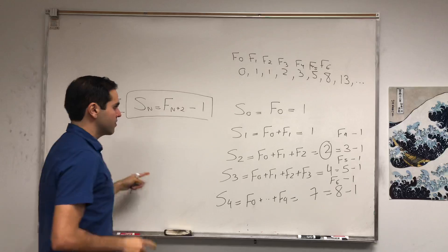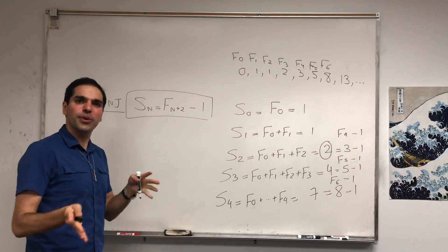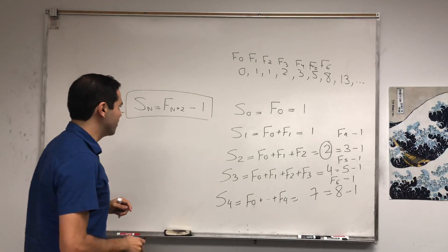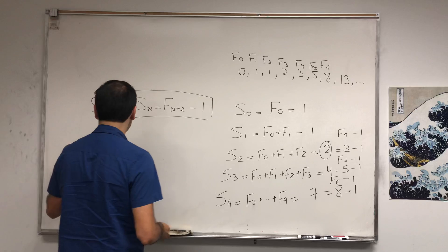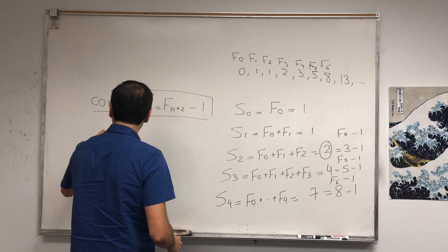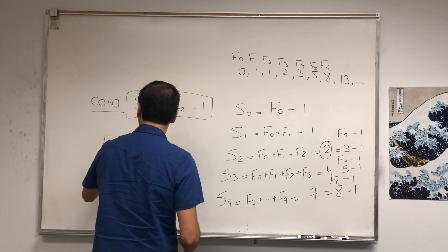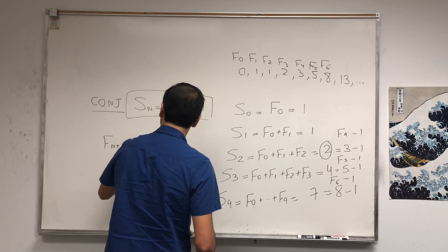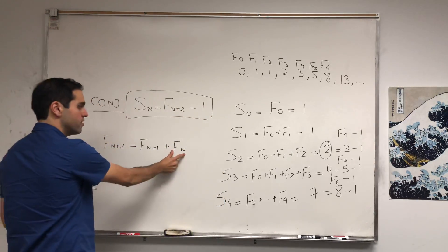Now you could do it by induction—it's not a problem—but it turns out there's a much nicer way of doing this, and it has to do with telescoping series. Because what do we know? We know that Fn+2 equals Fn+1 plus Fn, which tells us in particular...